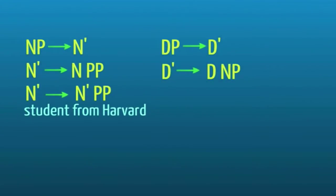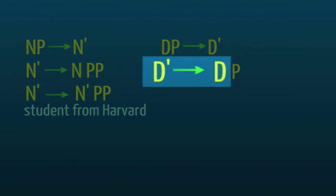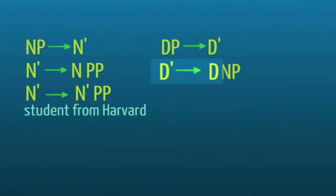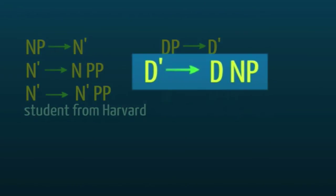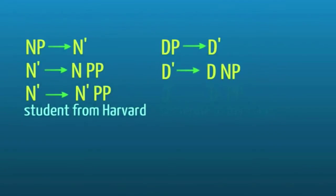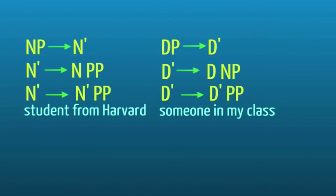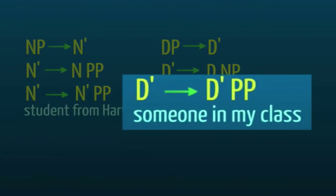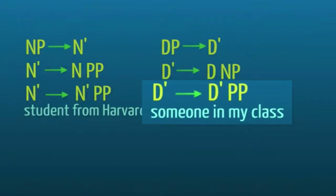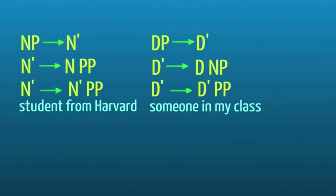A DP, a determiner phrase can do the same thing. So it minimally contains a D bar and a D bar that minimally contains this head, the D, but can also contain the D plus its complement, as in the case of this person or this group of people. But it can also contain a D bar that is followed by an adjunct phrase, as in the case of someone in my class, where the PP functions as an adjunct modifying the D bar.